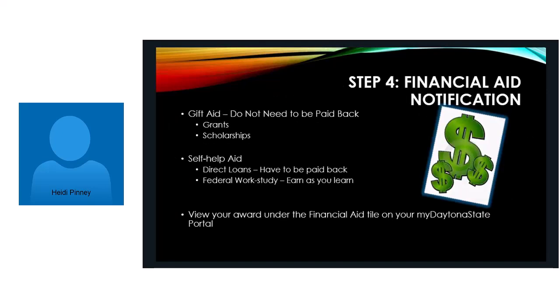Step four: after we get all your information and we start reviewing it, we then start sending you out what you've got as far as financial aid is concerned. It is usually comprised of a couple different things. The first thing is gift aid, which is free money that doesn't need to be paid back. A lot of times it's based on a student's financial need — need-based grants such as the Federal Pell Grant, the Supplemental Education Opportunity Grant, and if you're a Florida resident, you might get the FSAG, which stands for the Florida Student Assistance Grant.